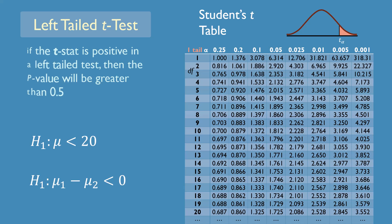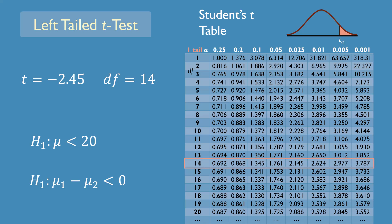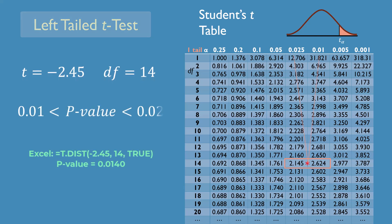Let's suppose the t-statistic is negative 2.45 with degrees of freedom 14 for this left-tailed test. We will locate the positive 2.45 between 2.145 and 2.624 here. And that indicates that the p-value is between 0.01 and 0.025.